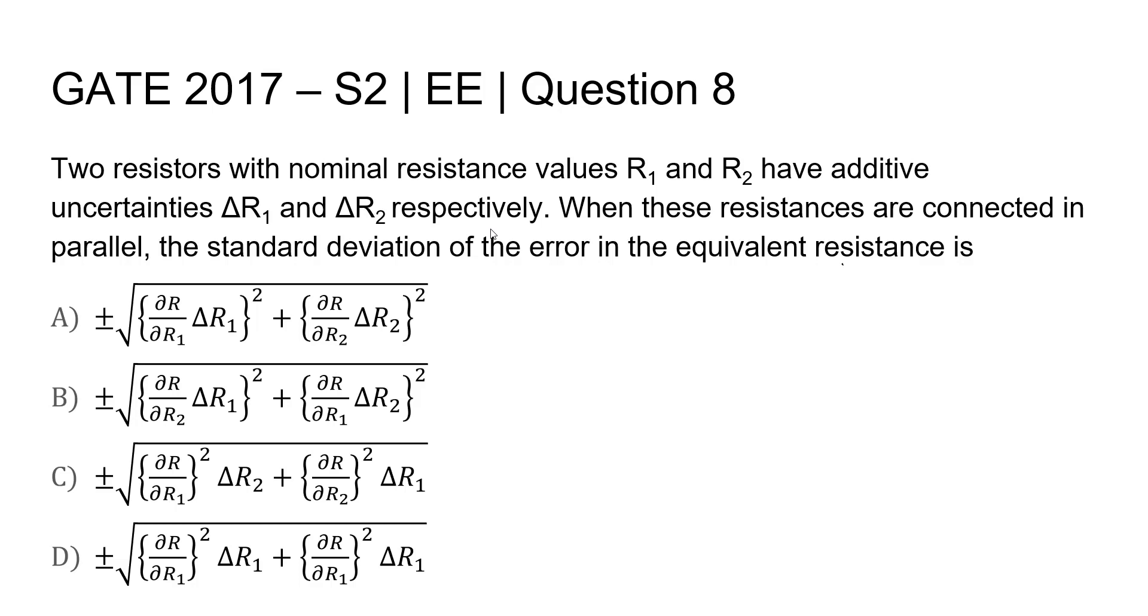Question 8, Electrical Engineering GATE 2017 Set 2. Two resistors with nominal resistance values R1 and R2 have additive uncertainties of delta R1 and delta R2 respectively.